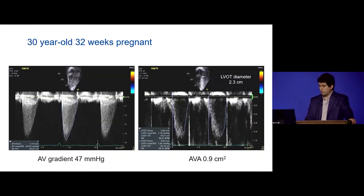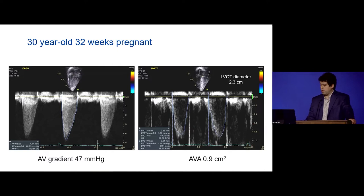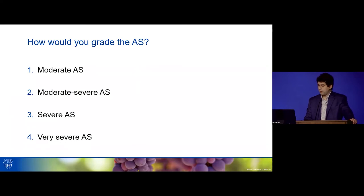Here's the aortic valve data. On the left-hand side, the mean gradient was quite high at 47 mmHg — a gradient that would concern any echocardiographer. On the right-hand side, we measured an LVOT diameter of 2.3 cm and an LVOT-TVI of 19, giving an aortic valve area of 0.9 cm². So with a gradient of 47 and a valve area of 0.9, how would you grade her AS — moderate, severe, or very severe?